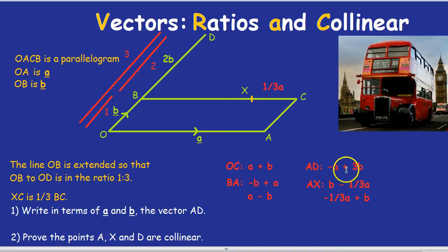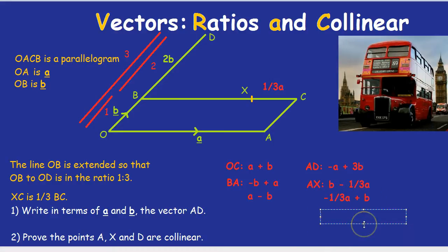Now, do you notice something pretty amazing about these two vectors? You've got minus a plus three b and minus a third a plus one b. If you spotted that if you times AX by three, you get AD, then give yourself a pat on the back. Because you've just proven they're collinear. If you notice, minus a third a times by three gets you to minus one a. And one b times by three gets you to three b. And if you're proving that they're just a multiple of each other, you're proving it's the same direction. You've just got to go further along.